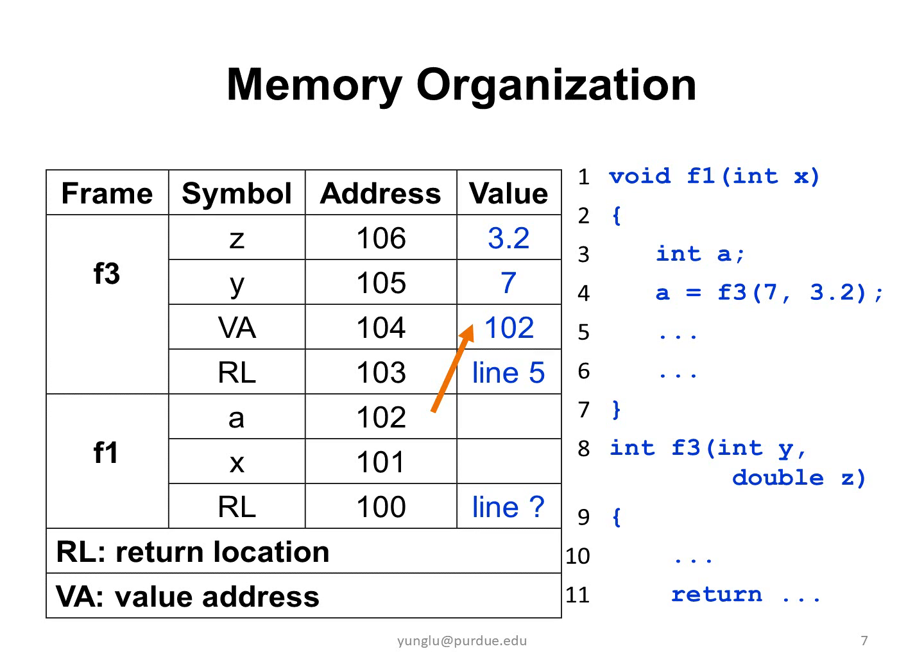Function F3 is called by F1 at line 4. Thus, the return location is line 5. The value returned from F3 is written to A, so the value address is the address of A and it is 102. Please notice that the value address is stored in the stack memory and spaces needed for storing this information. The value address is stored at address 104. Do not mix the value and the address. The value address is 102 and the address is stored at location 104.